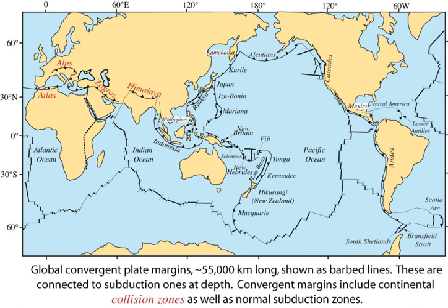Stable subduction zones involve the oceanic lithosphere of one plate sliding beneath the continental or oceanic lithosphere of another plate due to the higher density of the oceanic lithosphere. That is, the subducted lithosphere is always oceanic while the overriding lithosphere may or may not be oceanic.